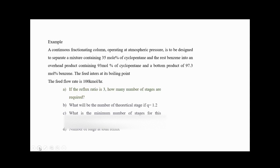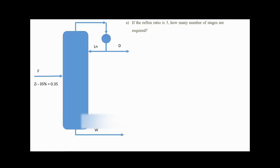For question one, where the reflux ratio is 3, we determine how many stages are required. This is the simple representation of the distillation column: feed enters at 100 kmol per hour containing 35 percent cyclopentane, distillate and reflux exit at the top, LN is the amount refluxed back to the column, and a bottom product exits at the bottom. XD, the mole fraction of cyclopentane in the distillate, is 0.93, and at the bottom XW is 0.027.